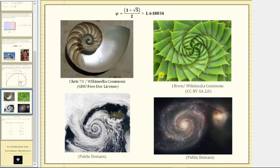And here are several examples of the golden spiral in nature. We have the spiral of a shell, the spiral of a plant, the spiral of a weather pattern or storm, and a spiral in space.